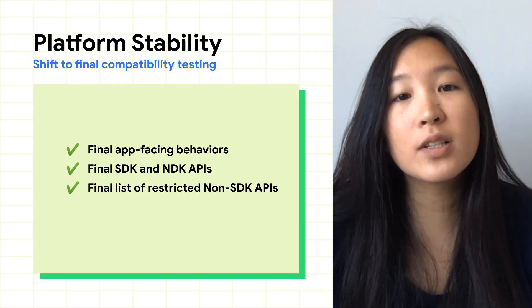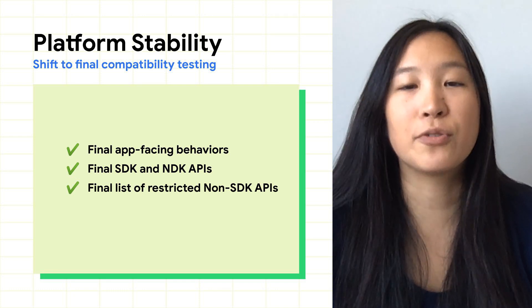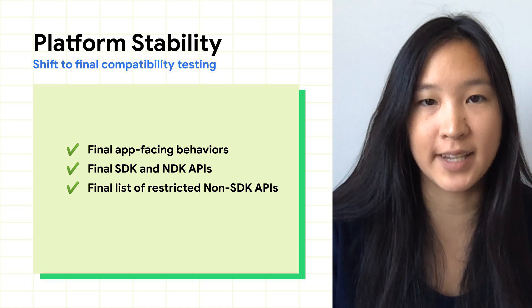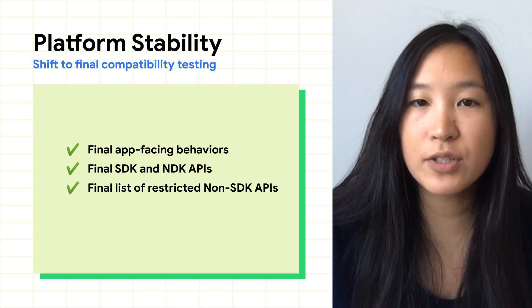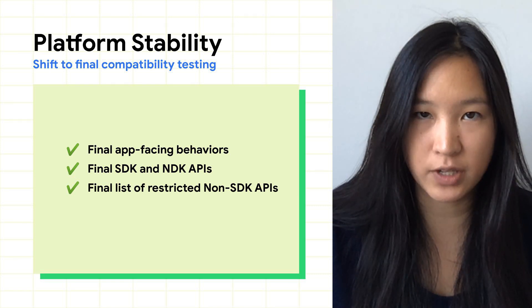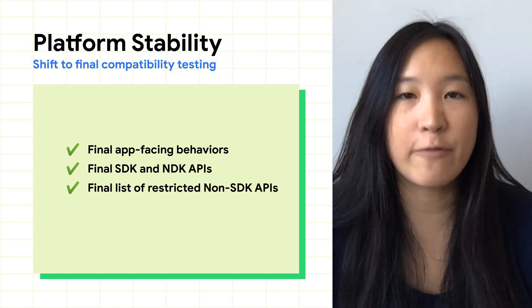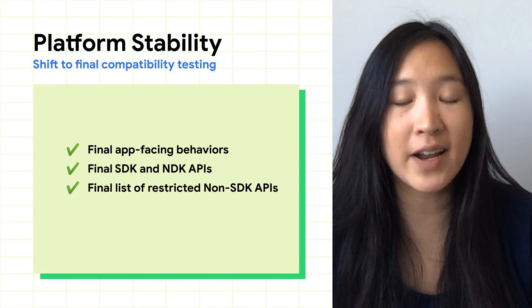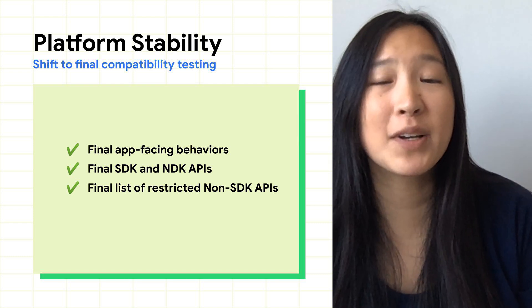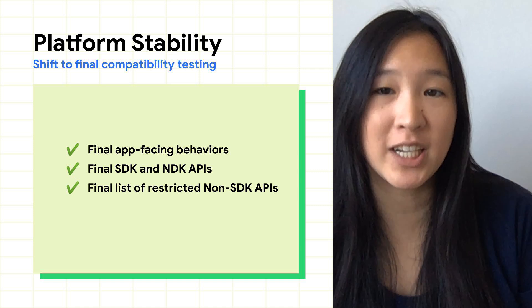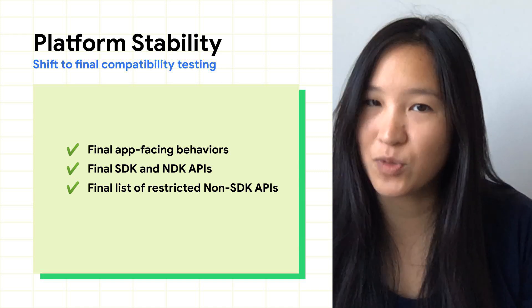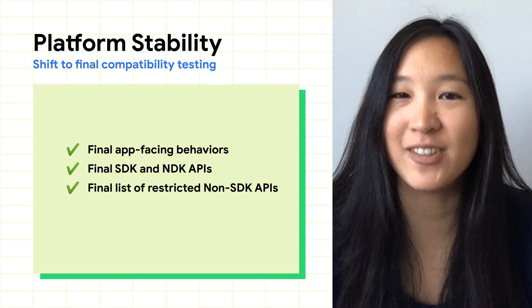New in Android 11, we're introducing a milestone called Platform Stability in order to help you plan your final testing and releases. This milestone means that Android 11 has not only reached the final internal and external APIs, but also final app-facing behaviors and final non-SDK lists. From this point on, you can expect no further changes affecting your app's behavior. Platform Stability is reached with beta 2, and that's out now.